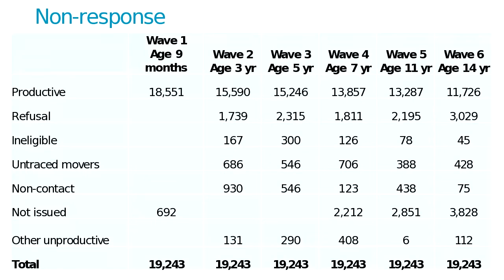We also have non-contact — respondents whose addresses are known, but we were unable to establish contact because they either live in gated communities or gated buildings, or have long working hours or night shifts. So we know their addresses but were unable to contact them for various reasons. Finally, there is the category of 'not issued' — respondents who have not participated for a number of consecutive waves, so we know they are very unlikely to be contacted in the future, and therefore, to minimize the cost of the survey, we do not attempt to contact them.